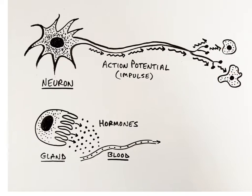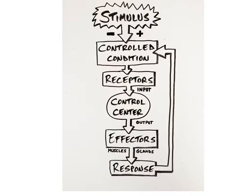In contrast, regulation is performed more slowly — in seconds, minutes, or hours — by the endocrine system through the secretion by glands of hormones directly into the blood. Regulation of homeostasis is carried out through a variety of feedback systems, also called feedback loops. A feedback system involves the continual monitoring, evaluation, and adjustment of a body condition to keep it within normal range, with the system's response feeding back information to change the controlled condition.